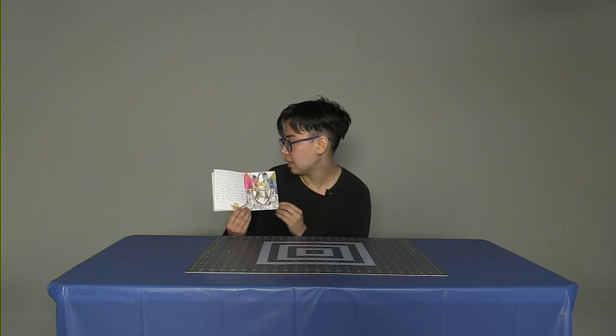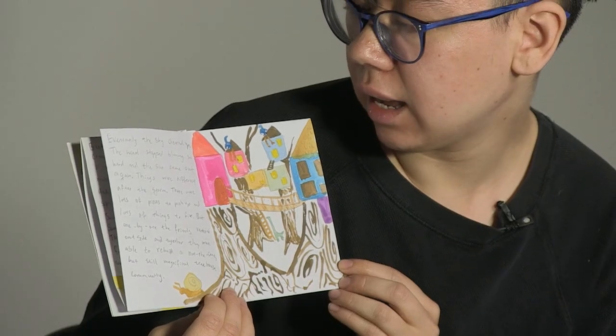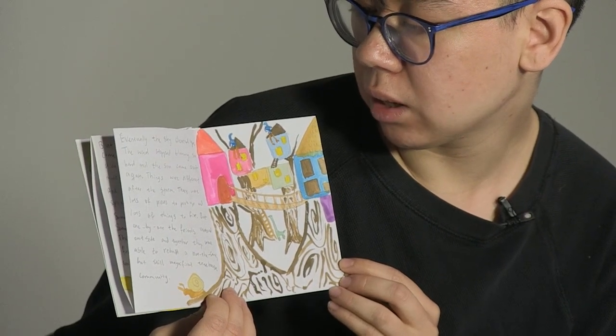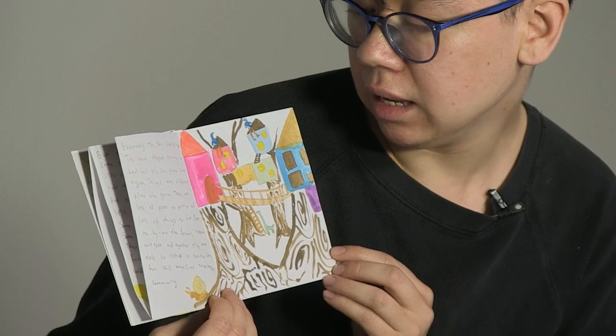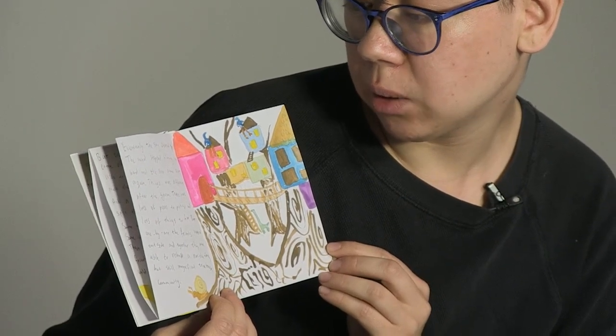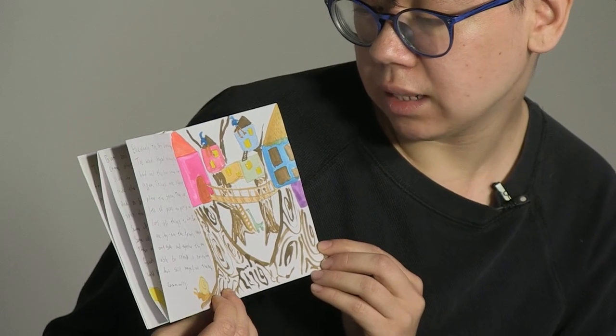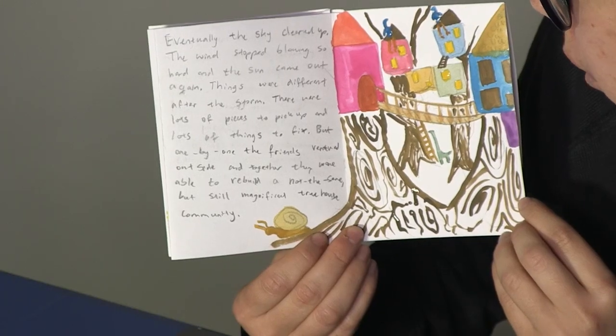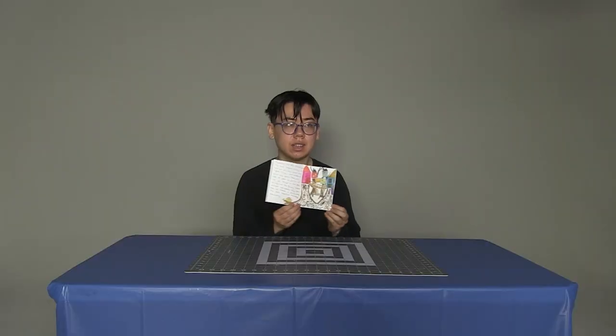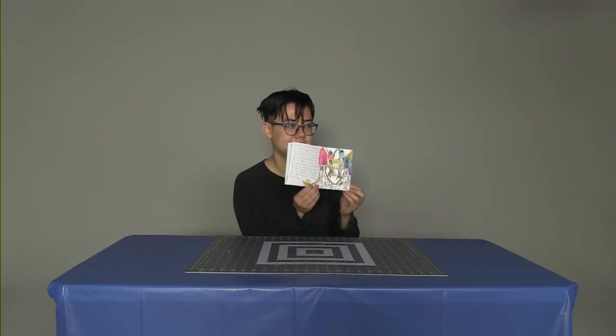And in our last section, eventually the sky cleared up. The wind stopped blowing so hard and the sun came out again. Things were different after the storm. There were lots of pieces to pick up, lots of things to fix. But one by one, the friends ventured outside and together they were able to rebuild a not the same but still magnificent tree house community. The end.